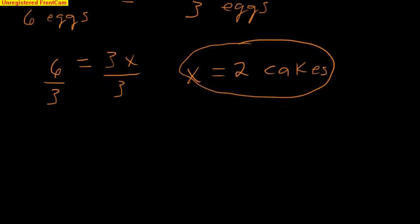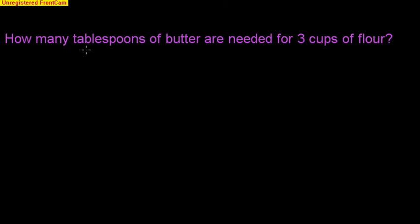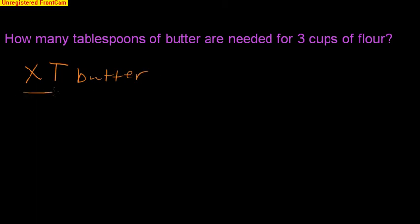So let's do another problem. This one says: how many tablespoons of butter are needed for 3 cups of flour? So once again, let's take what we know from the problem. The left-hand side of the proportion comes from the problem. It says 'how many tablespoons' — we don't know. So I'm going to put x tablespoons of butter over 3 cups of flour.